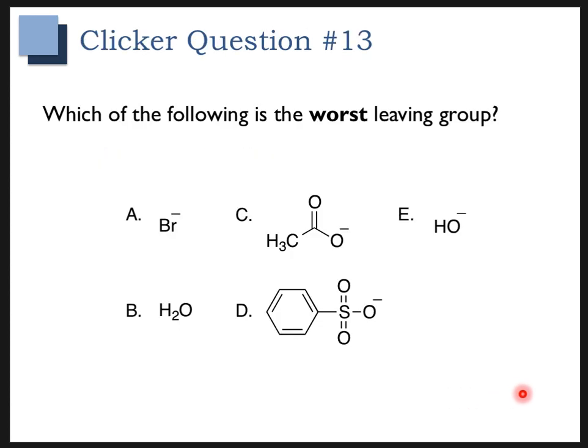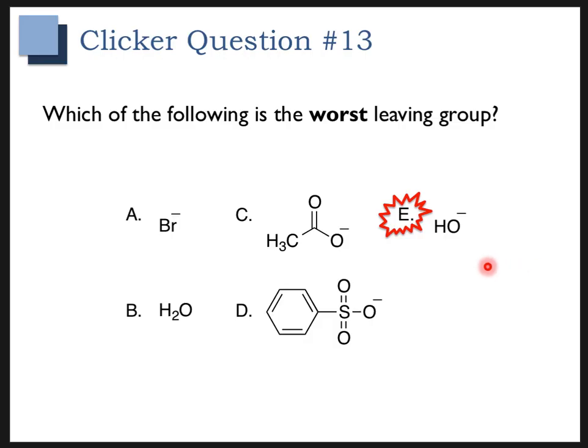Here's another clicker question: which is the worst leaving group? Pause the video and give it a try. Hopefully you got hydroxide. Basically, the worst leaving group is the strongest base — we already went over that. Bad leaving groups are strong bases, and the weaker the base, the better the leaving group. The same trend we saw for substitution reactions applies for elimination reactions.